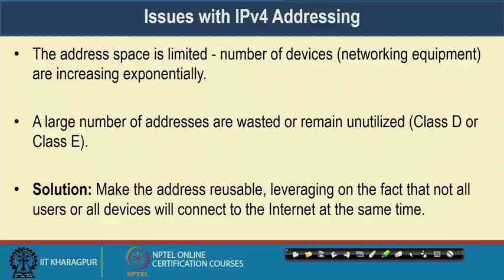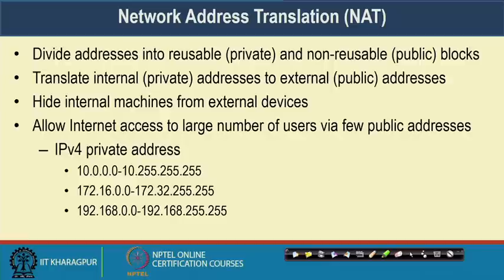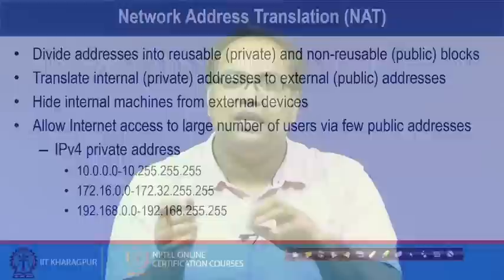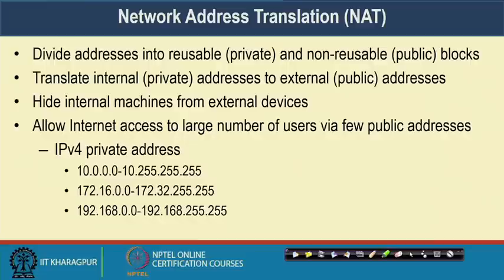You first disambiguate whether you need to send the mail to IIT Kharagpur, IIT Delhi, or Stanford. Once the mail reaches there, you send it to the person concerned inside that institute. So we require a notion of a publicly available unique address, and then a private address inside the organization which can be reused in multiple places. In NAT, we divide the available address space into reusable addresses — the private addresses — and non-reusable addresses — the public addresses, which are unique and used to send packets globally.